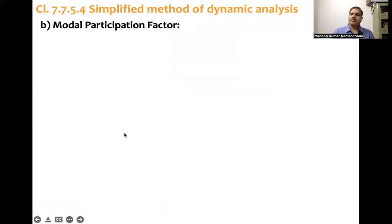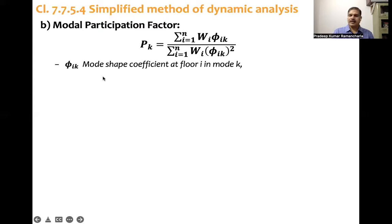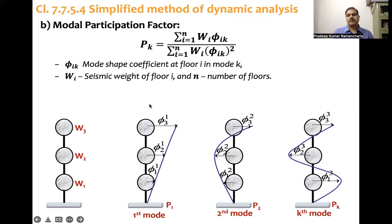The second parameter is mode participation factor. Mode participation factor is Pk where k is mode number, so Pk equals summation from i equals 1 to n, wi φik, and denominator wi φik square. Here numerator one doesn't have square and denominator this mode shape coefficient has square in it.